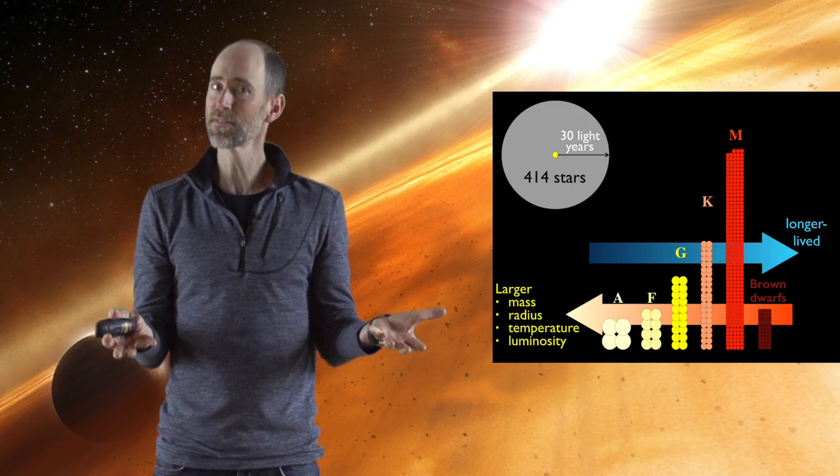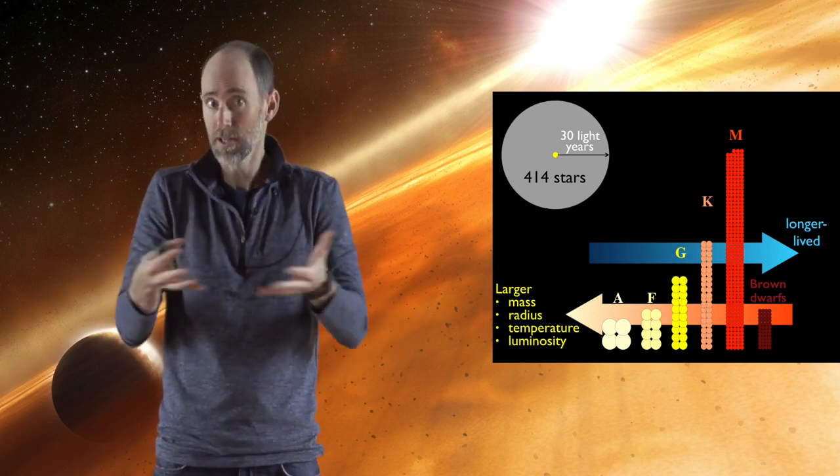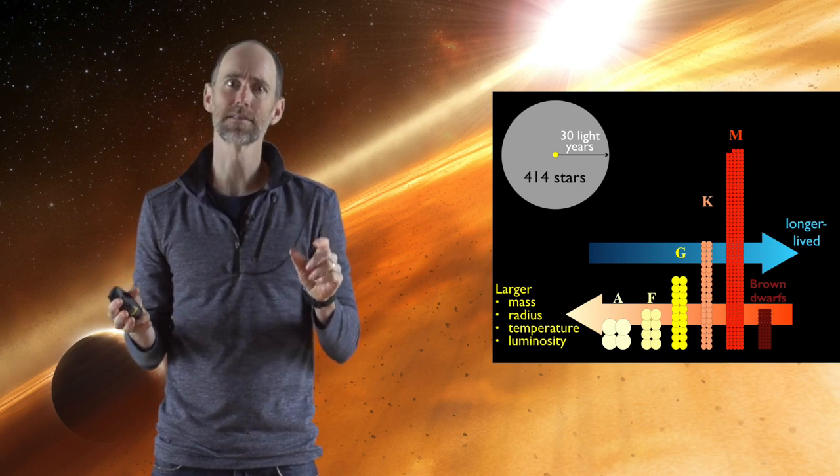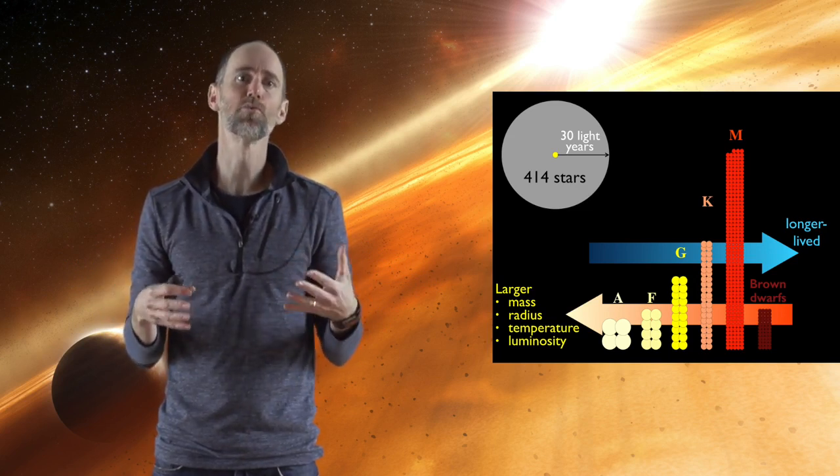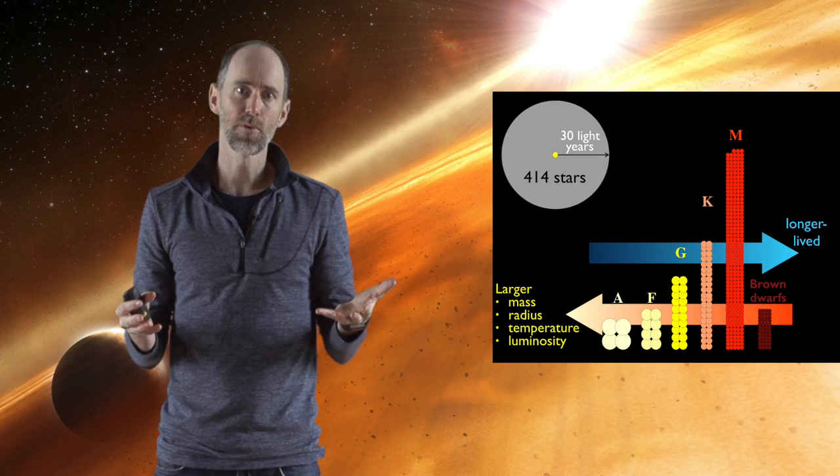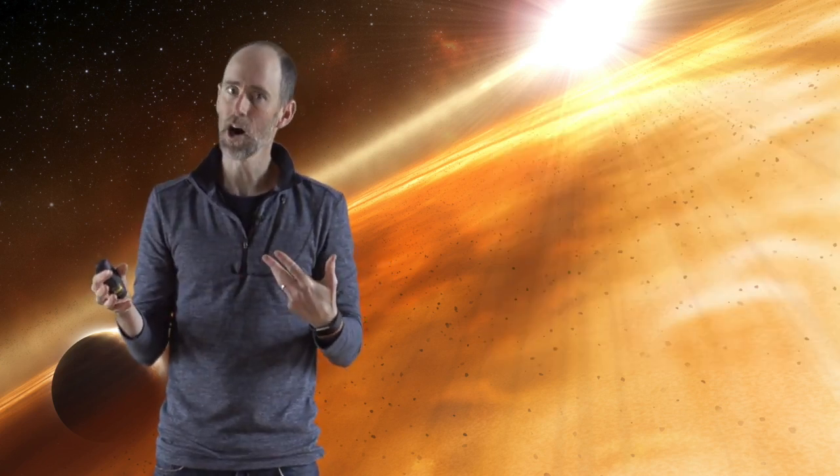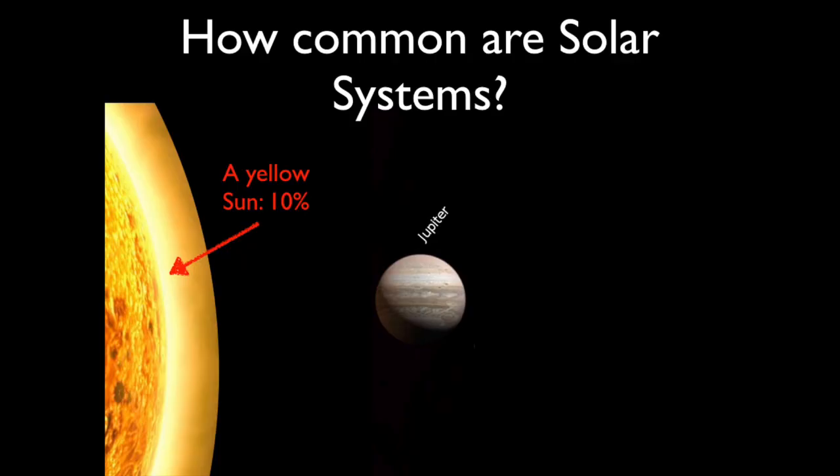But most of the stars close to the Sun or within the whole galaxy are small red M stars, sometimes called red dwarf stars. The fact that we have a yellow Sun instead of a red Sun already puts our solar system in the minority - about the 10% minority. We have about a 10% chance within the galaxy of having a yellow Sun.